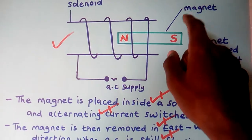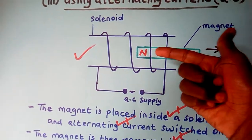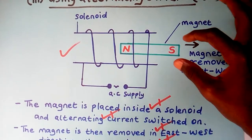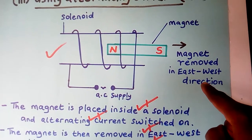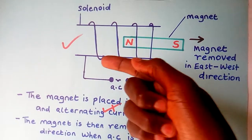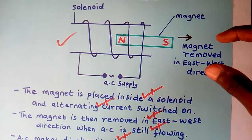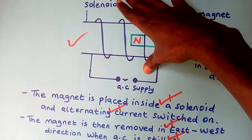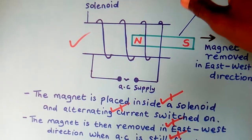You have a magnet with the north and south pole. You get your magnet, push it inside the solenoid, then you switch on the current. Within a short time, you remove the magnet in an east-to-west direction — you remove it when it is facing east to west. So you put your magnet inside the solenoid, switch on the current, then after a short time remove the magnet. When you remove the magnet and test it, you will find that it has already lost all its magnetism, which means it has been demagnetized.